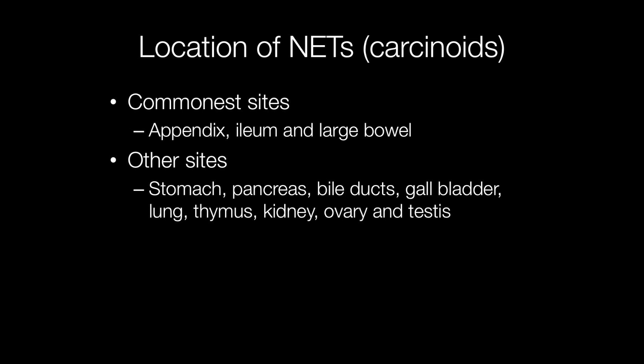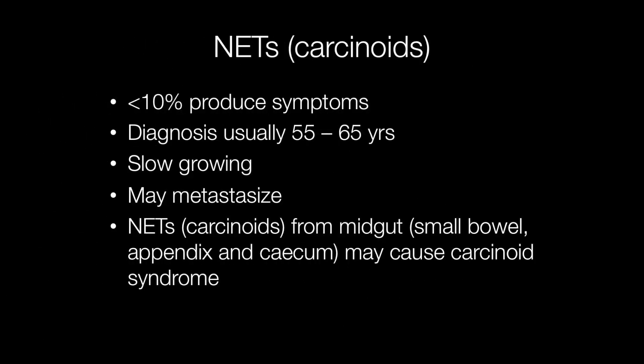Other sites include stomach, bile ducts, gallbladder, thymus, kidney, ovary, and testis. These tumours are usually slow growing and less than 10% produce symptoms, with diagnosis typically in the age group of 55 to 65 years. NETs or carcinoids may metastasise, and tumours that arise from the small bowel, appendix, and cecum may cause the carcinoid syndrome.